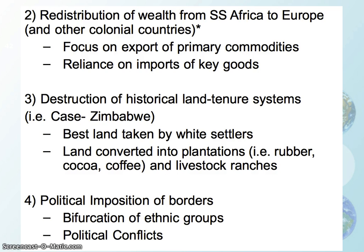A third legacy of colonialism is the destruction of historic land tenure systems — the way land gets handed down through different cultures. In places with white settlers, like Zimbabwe, the best land was taken by whites and converted into large-scale plantation and livestock ranches. When these areas became independent with majority African populations, white settlers still held the best land. This created significant conflict and ongoing questions about whether land should be redistributed to black Africans living there, and how those issues should be handled — an ongoing problem in many countries that had white settlers.